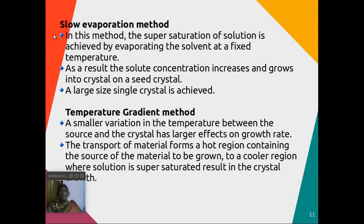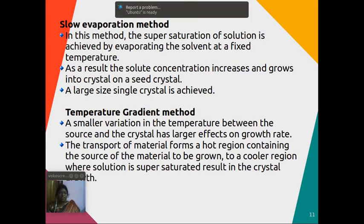In the temperature gradient method, even a small variation in temperature between the source and the crystal has a large effect on the crystal growth rate. Material is transported from a hot region containing the source to a cooler region where the solution is supersaturated, resulting in crystal growth. Thus, the transport of material from the hot region to the cooler supersaturated region causes the crystal to grow.